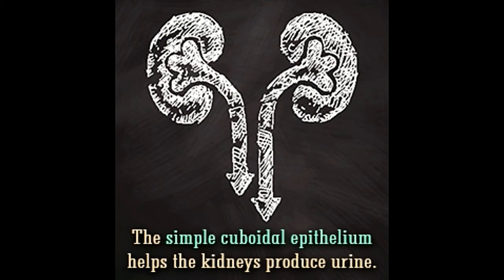Definition: A simple cuboidal epithelium is a tissue made up of cube-shaped cells, which is involved in secreting — producing and releasing — and absorbing substances in various glands and ducts throughout the body. Location: The simple cuboidal epithelium is mostly found in the lining of glands — organs that produce substances — and is not common on exposed surfaces. It is also found in the ducts that transport the secretions produced by a gland to the organ it is intended for.